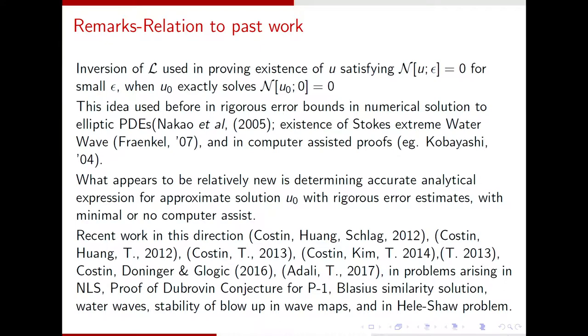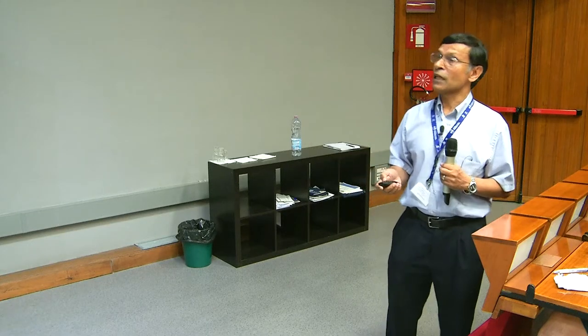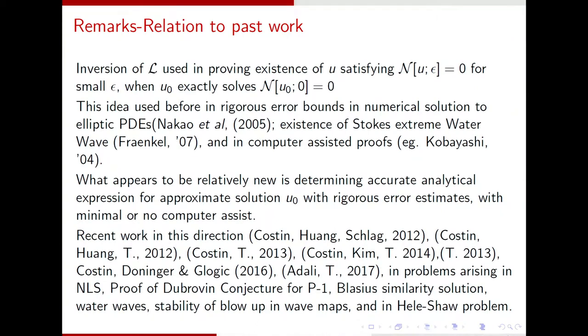So now, I want to make some remarks because some of what I'm saying is related to past work. It's a very natural idea. So it's very natural that it has become, other people noticed it in different contexts. For instance, if someone is trying to prove that there is a solution to N of U epsilon equals zero for small epsilon, where epsilon is some parameter, and they have an exact solution when epsilon equal to zero, what do they do? They do exactly what I mentioned. Namely, they formulate an equation for E, E being U minus U naught. So it will involve the Frechet derivative of the operator, and you have to invert, and you exactly do what I said. So this idea also is the basis of rigorous error bound. There is a lot of literature and computer assisted proofs which basically rely on this idea.